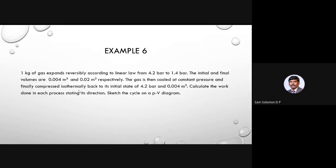The initial and final volumes are given for process 1-2. The gas is then cooled at constant pressure, and finally compressed isothermally back to its initial state. Calculate the work done in each process stating its direction and sketch the cycle on a PV diagram. It's a cycle with three processes: process 1-2, 2-3, and 3-1. Process 1-2 follows a linear law, process 2-3 is constant pressure heat rejection, and process 3-1 is isothermal compression.